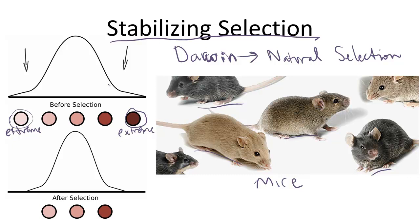Stabilizing selection — you've got that root word 'stable' in it — states that organisms with extreme forms of a trait will be eliminated from the population.